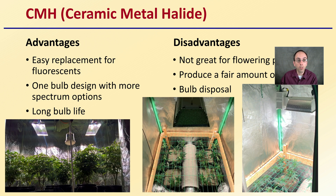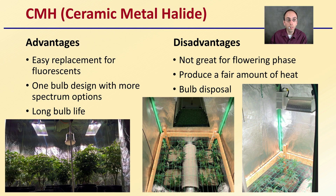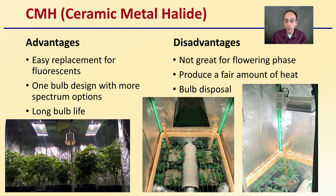Moving on to CMH, or ceramic metal halide lights: the advantages are that they're easy replacements for a fluorescent light setup, they have a one-bulb design with more spectrum options compared to fluorescents, and they also have a long bulb life. The disadvantages are that they're not great for the flowering phase, they produce a fair amount of heat, and bulb disposal is also a concern — though there tend to be fewer bulbs compared to a fluorescent setup.